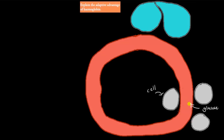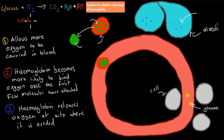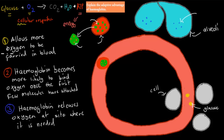When it comes to the actual dot point, you need to know the advantages — why do we have hemoglobin? Remember this equation: glucose + O2 → CO2 + water + ATP. This is cellular respiration, which happens in cells. Cells need glucose and oxygen to make ATP, which is energy. We need energy to grow, reproduce, and do all kinds of things. So cells need oxygen to survive. One of the three main reasons we need hemoglobin is that it allows us to carry much more oxygen — it allows more oxygen to be carried in blood.